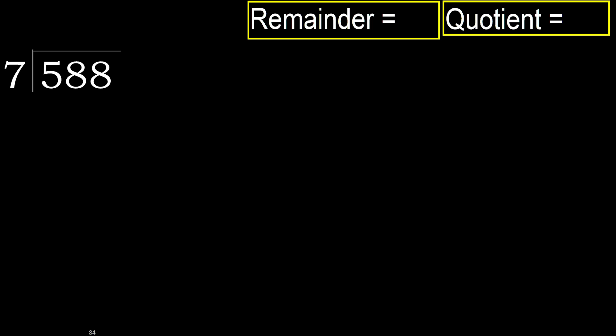588 divided by 7. 5 is less, therefore next. 58 is not less, therefore we work with 58. 7 multiplied by which number is nearest to 58, but not greater.